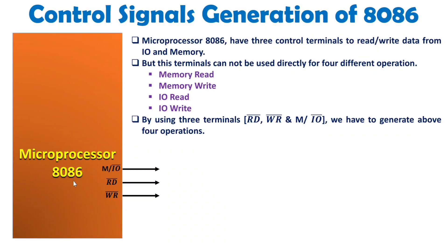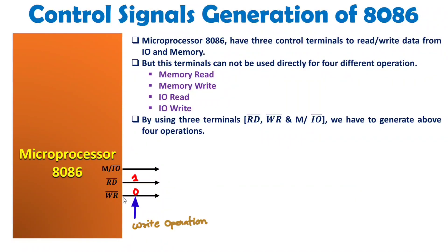Read and Write cannot happen simultaneously. Whenever Read bar is logic 0, Write bar should be logic 1 — meaning there will be a read operation. Whenever Write bar is logic 0, Read bar should be logic 1 — meaning there will be a write operation. That read or write can happen with either memory or IO, determined by the Memory/IO bar line: if it is 1, memory operation; if it is 0, IO operation.